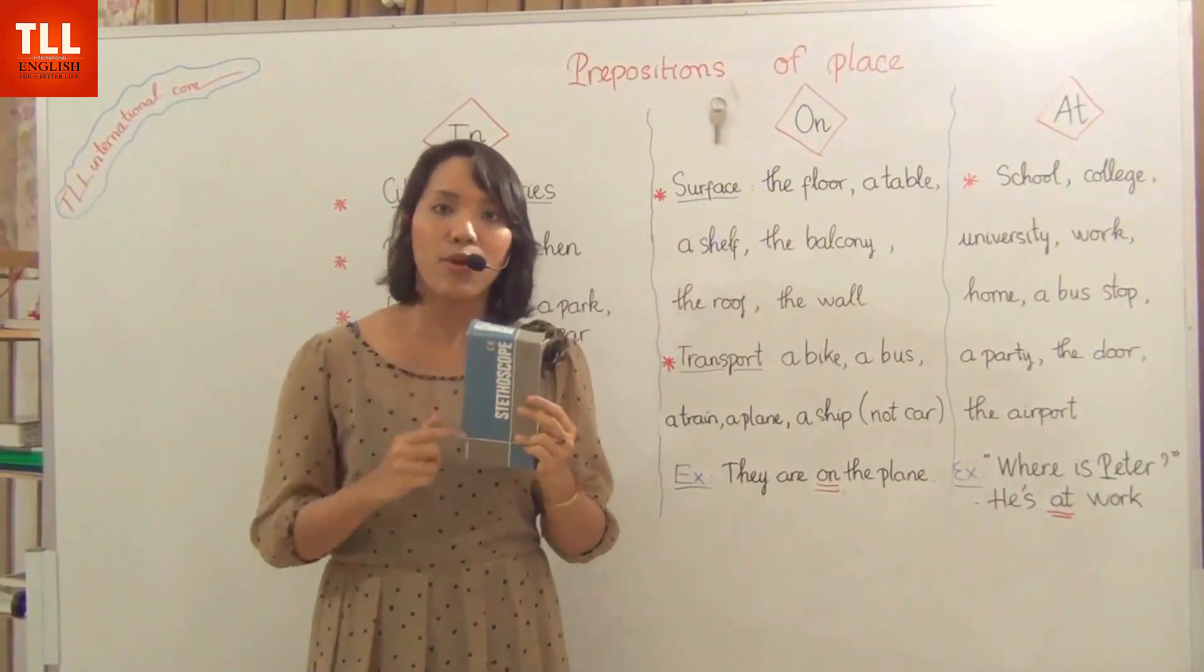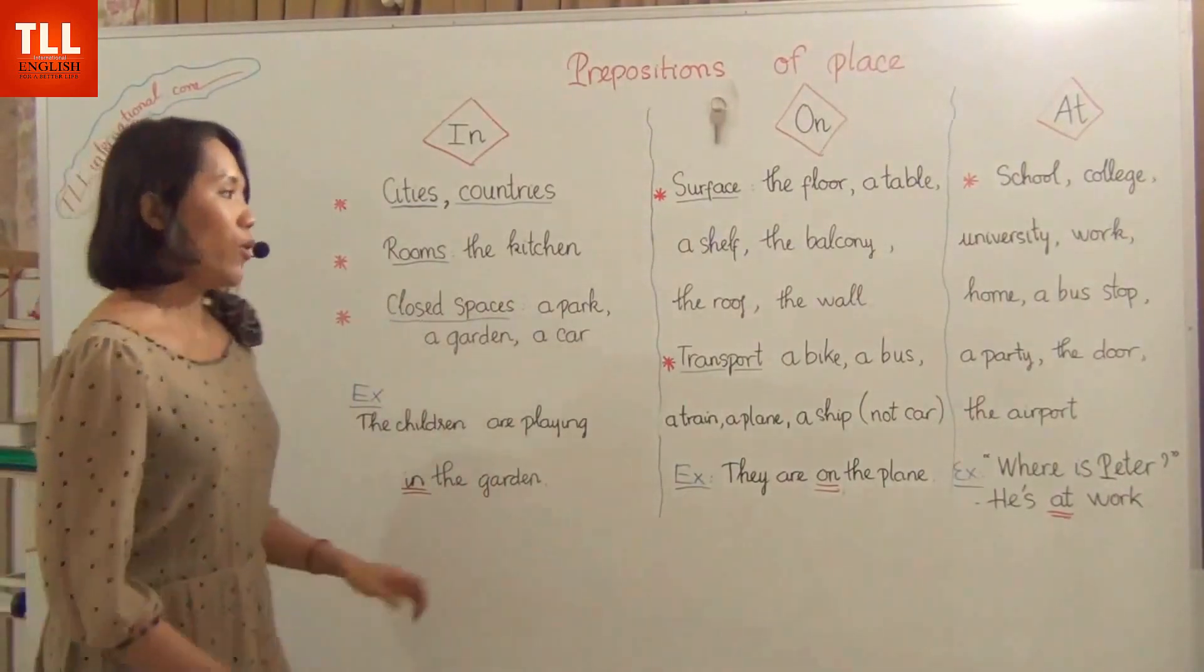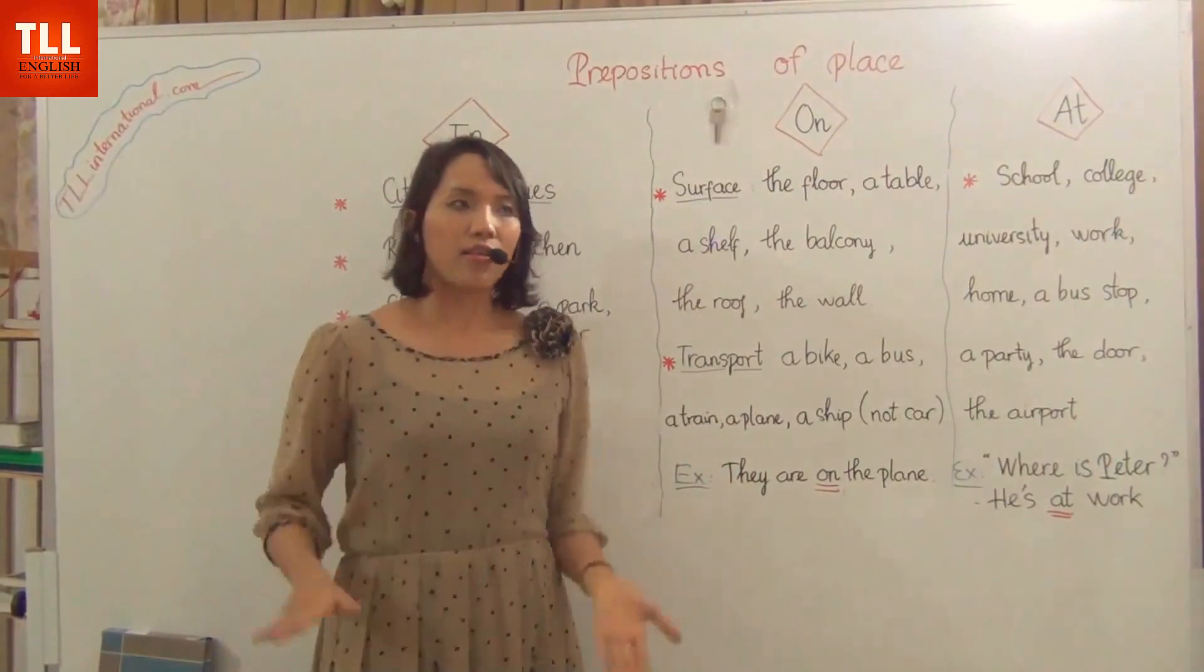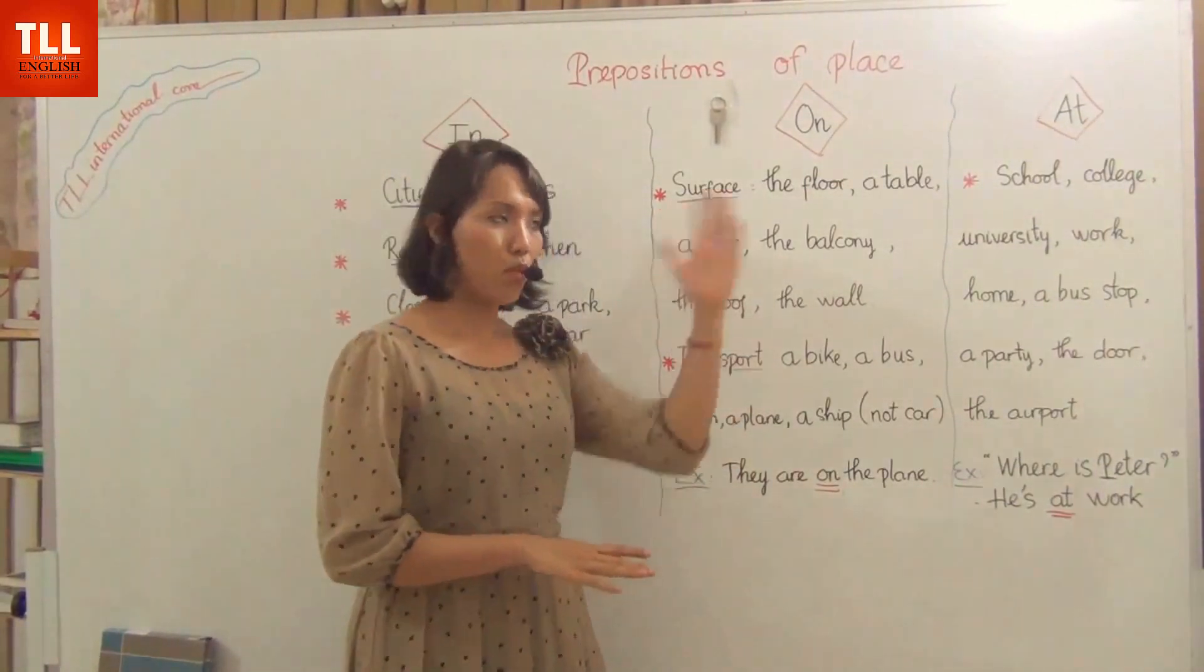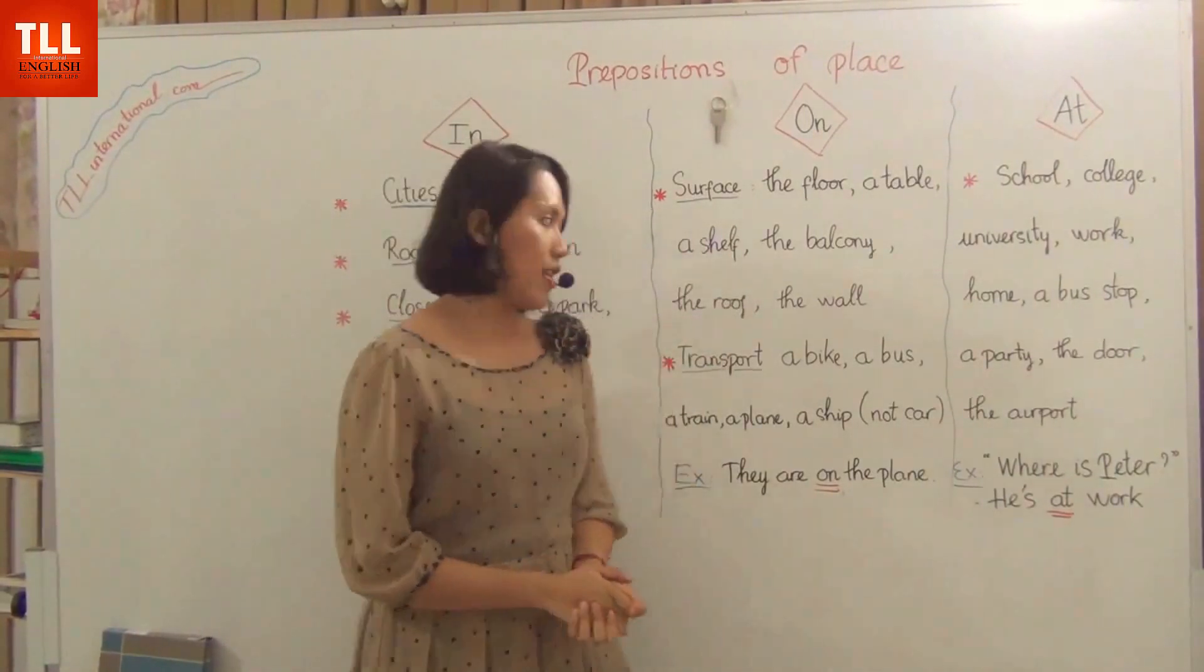The second preposition is ON. We use ON usually for the surface, like the roof, the wall, the table, the floor, the shelf, or the balcony.